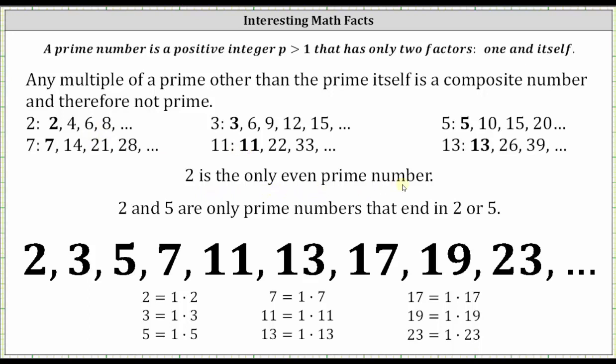Two is the only even prime number. Two and five are the only prime numbers that end in two or five. And now let's take a closer look at the ending digits of primes.